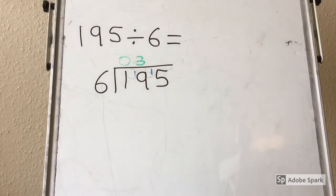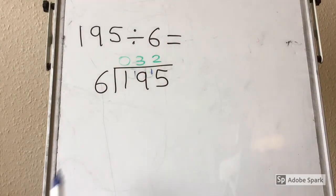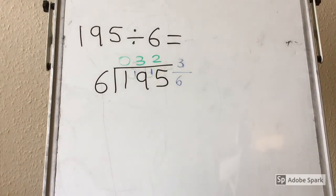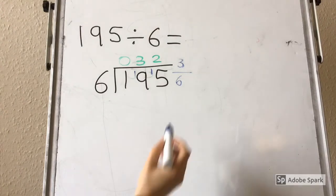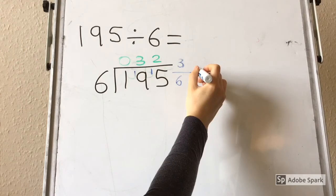6 goes into 15 twice, because 2 times 6 is 12. And there are 3 left over between 12 and 15, so our remainder is 3 sixths. If you are confident with your fractions, you might be able to simplify 3 sixths to 1 half, and you might know that the decimal equivalent to 1 half is 0.5.